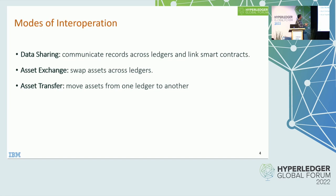We ideally don't want that. What we wanted to achieve was a deeper level of interoperation where networks can interact with each other in a decentralized manner without requiring any kind of trusted proxy. Our observation was that we could boil down the different cross-network scenarios to three kinds of patterns: data sharing, asset exchange, and asset transfer. Data sharing means the ability to communicate ledger records across two distinct ledgers and to link two different smart contracts together.